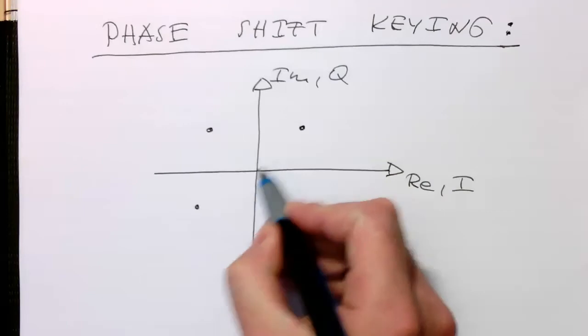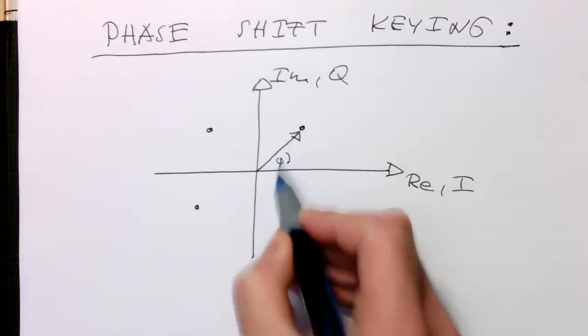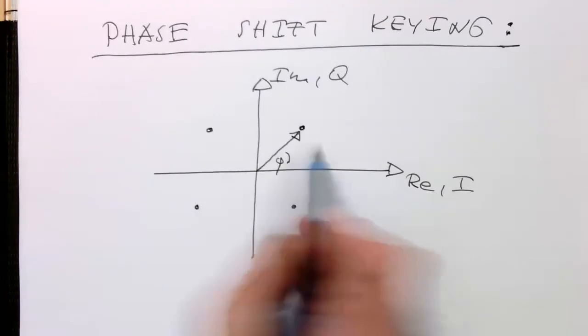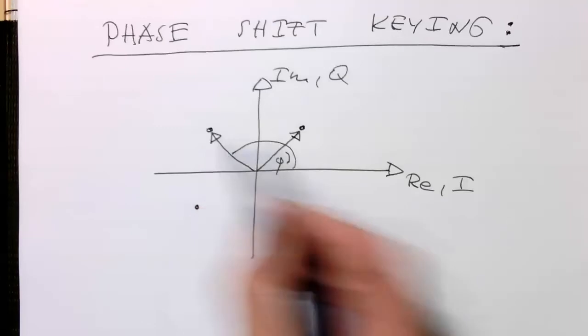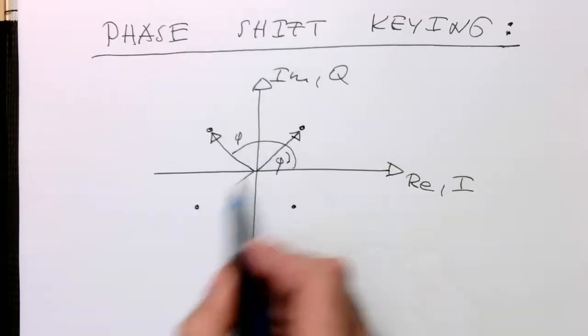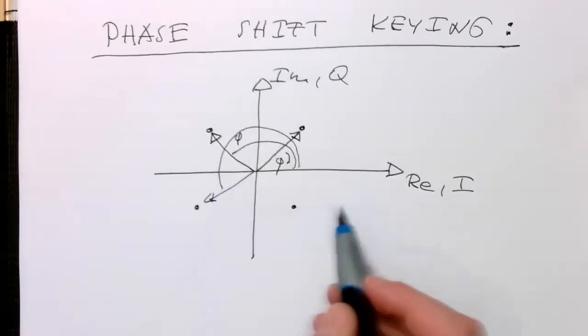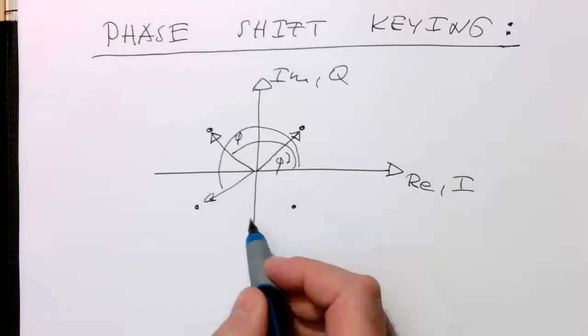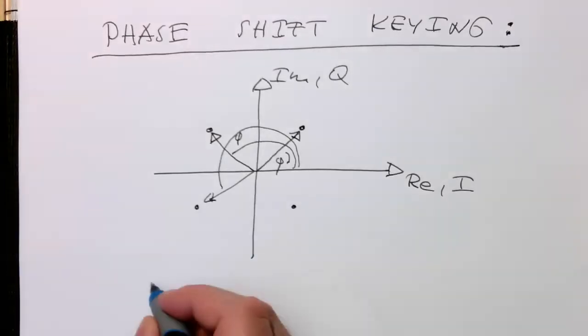Now what you can do is define an angle here. If we go here we've got another angle, and here we've got another angle. It's getting a bit messy here, but we see that we can basically define our symbols as phase angles.